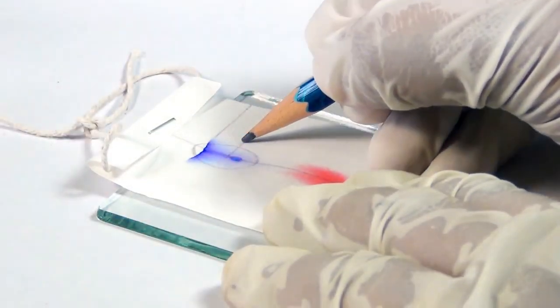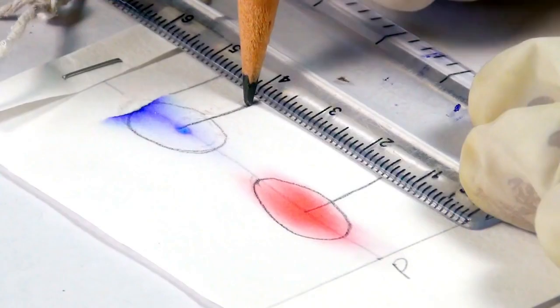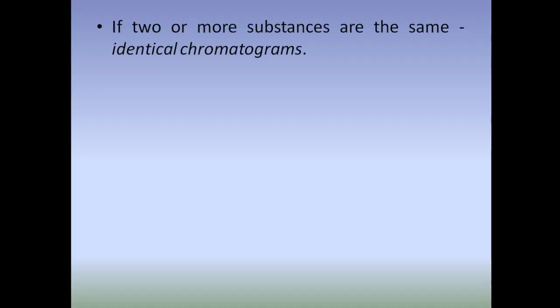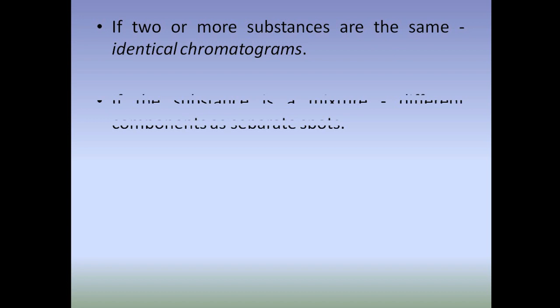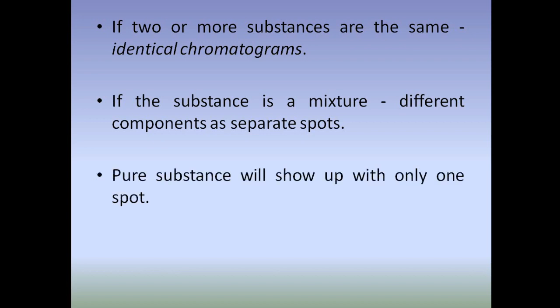Dry the filter paper and mark the middle of the samples, then measure the distance that the samples traveled from the starting line. Now calculate the Rf value. In a mixture, if two or more substances are the same, we will get identical chromatograms; if the substance is a mixture with different components, we will get different chromatograms.